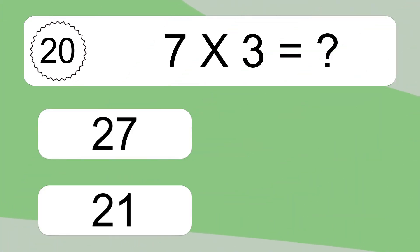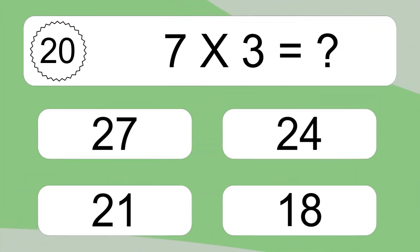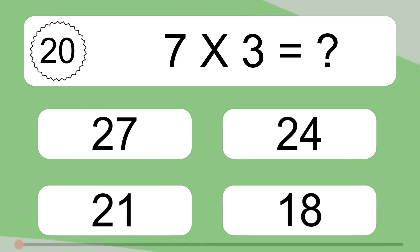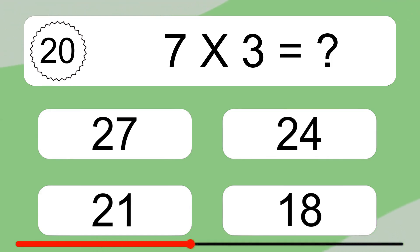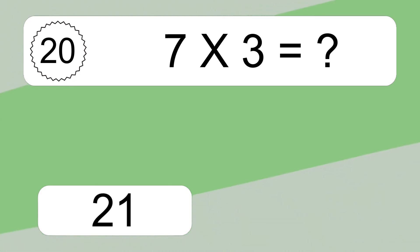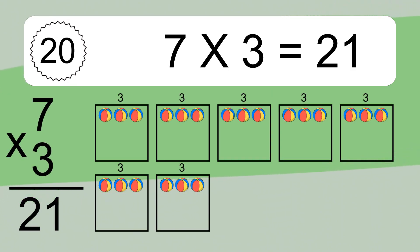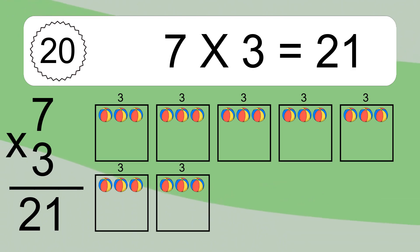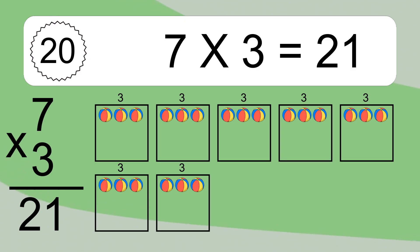7 times 3 equals what? 7 times 3 equals 21. We have seven boxes and each box has three colorful balls inside. If you count all the balls in all the boxes together, you will have seven times three balls. This equals 21 balls.